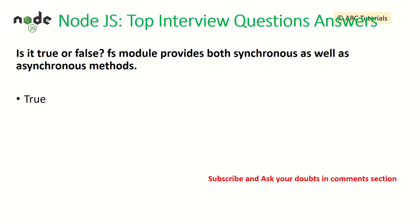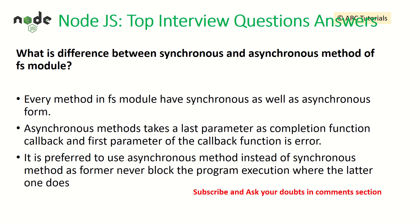True or false: the FS module provides both asynchronous and synchronous methods. That is true — it provides provisions for both. What is the difference between synchronous and asynchronous mode of the FS module? Every method in the FS module has synchronous as well as asynchronous forms. The asynchronous method takes a completion function callback as its last parameter, and the first parameter of the callback is an error. Always prefer asynchronous over synchronous because it doesn't block — you can implement a callback mechanism.